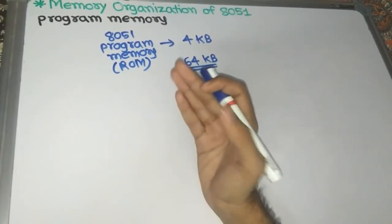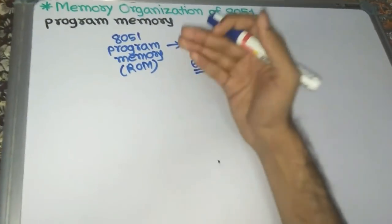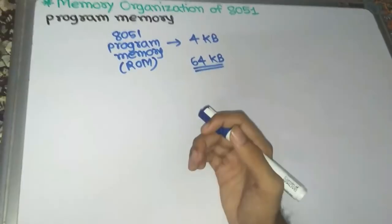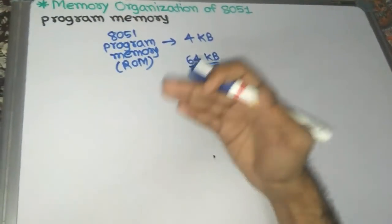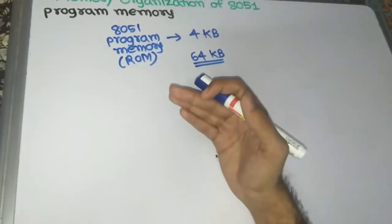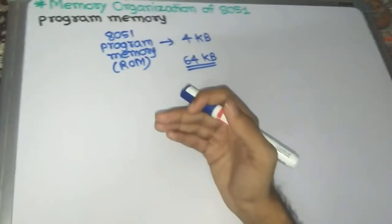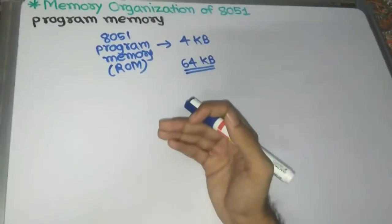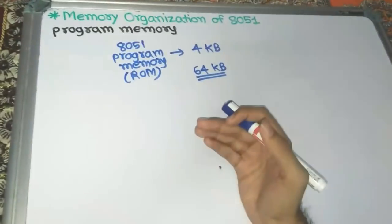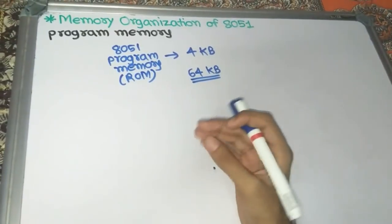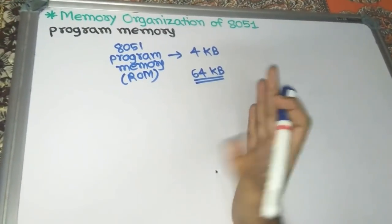The program counter increments by one, providing a different address for a different instruction. This is the program counter — it is always used to store the program only, not data.